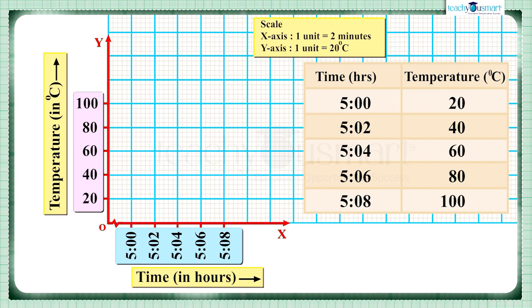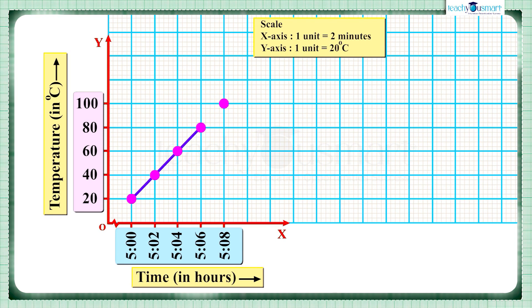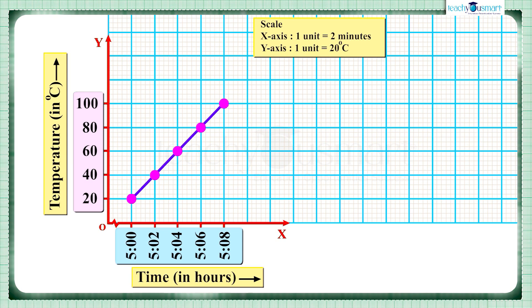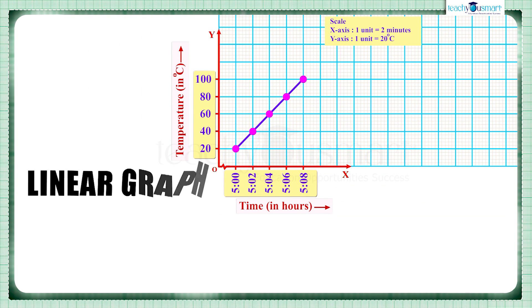Now we can plot each point as per the given information and then join the points. Thus we get a graph. Is it a line graph? Yes, of course, because it displays information as a series of data points connected by straight line segments. Here we get a straight line where all the data points lie on the straight line. Such graphs are called linear graphs.